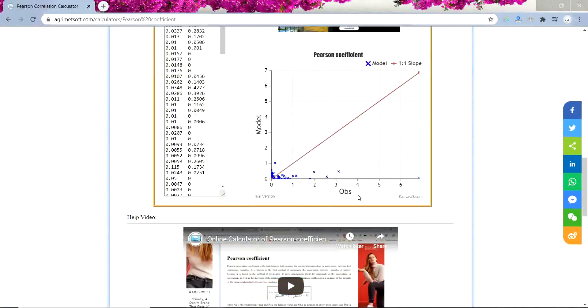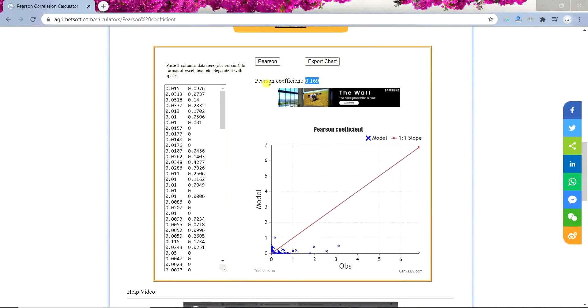So here you can see my Pearson Coefficient is like 0.16 which is not a very good number but it says as it's positive, you can see that their increase or decrease are in line. So if my model values are increasing, my observation values are increasing too and vice versa.